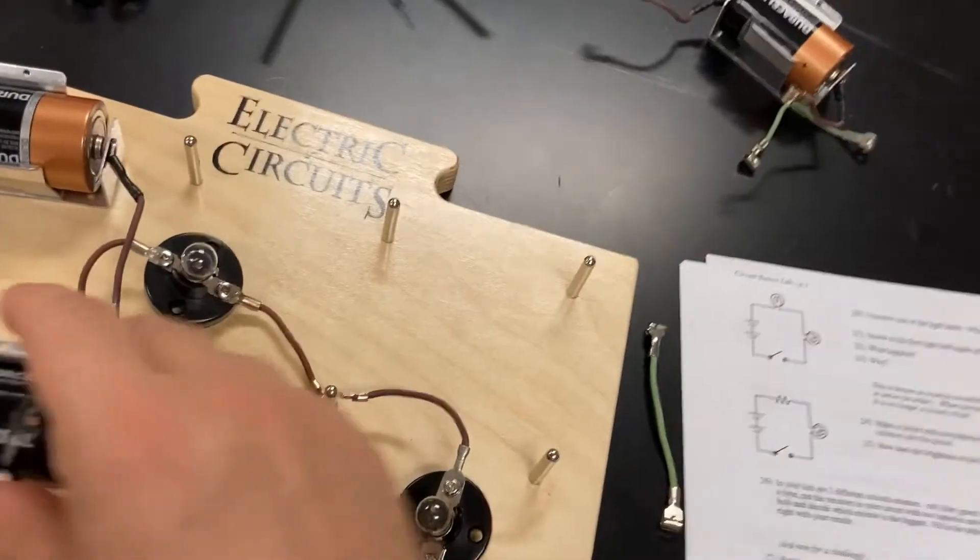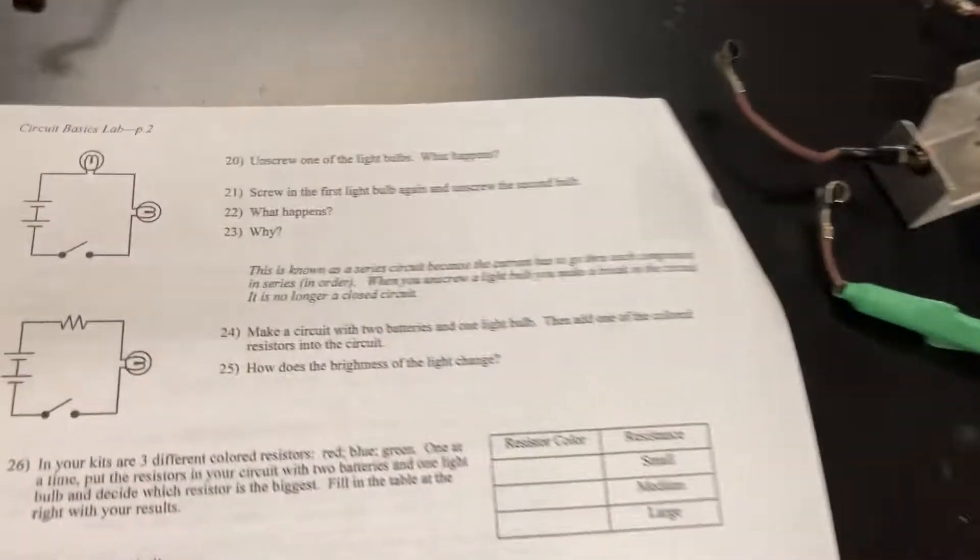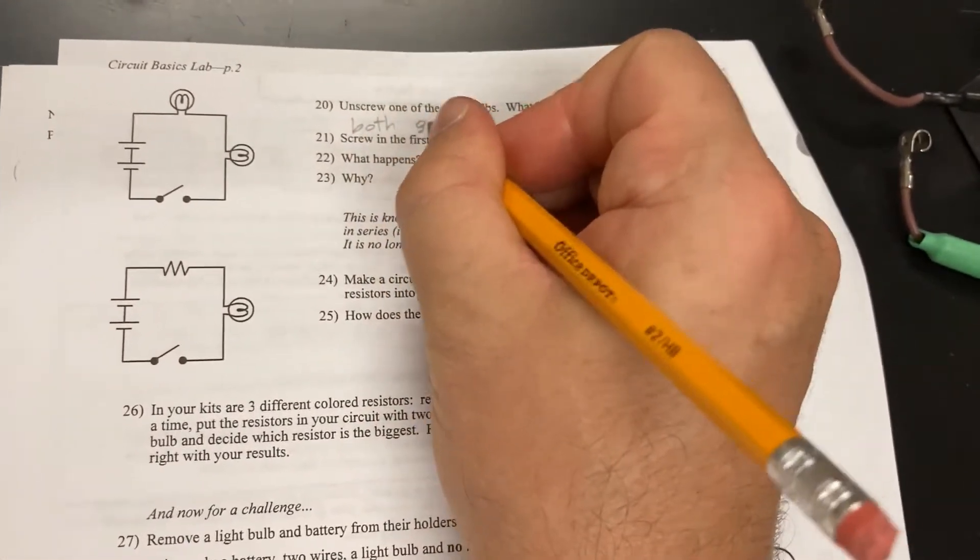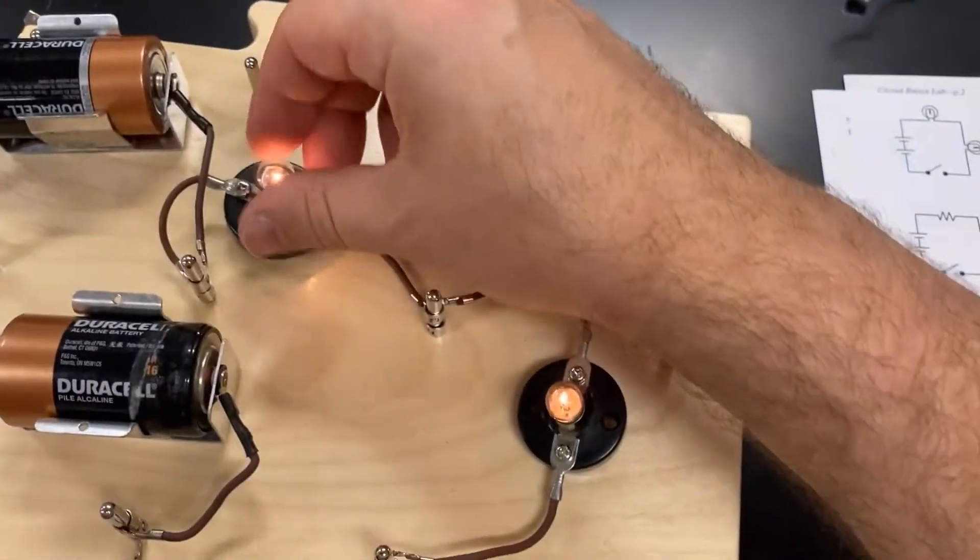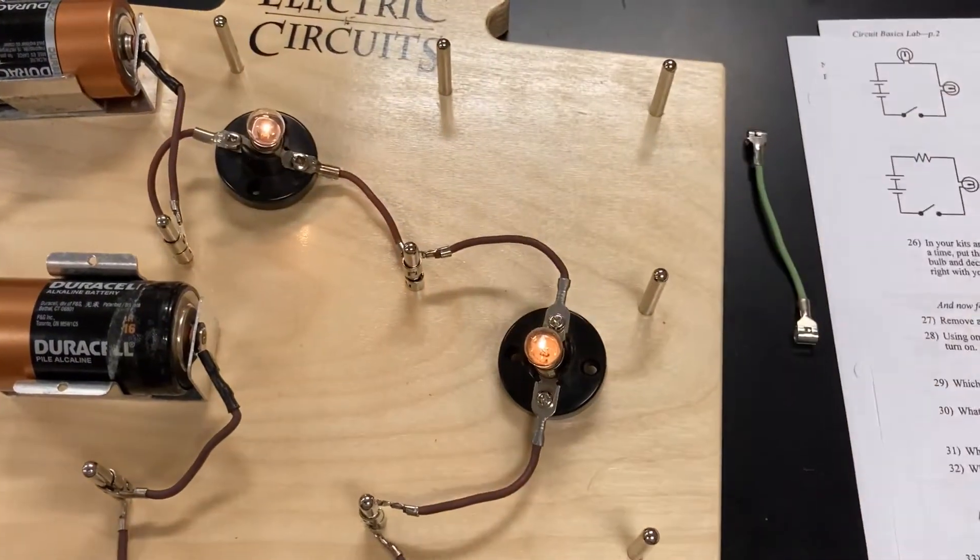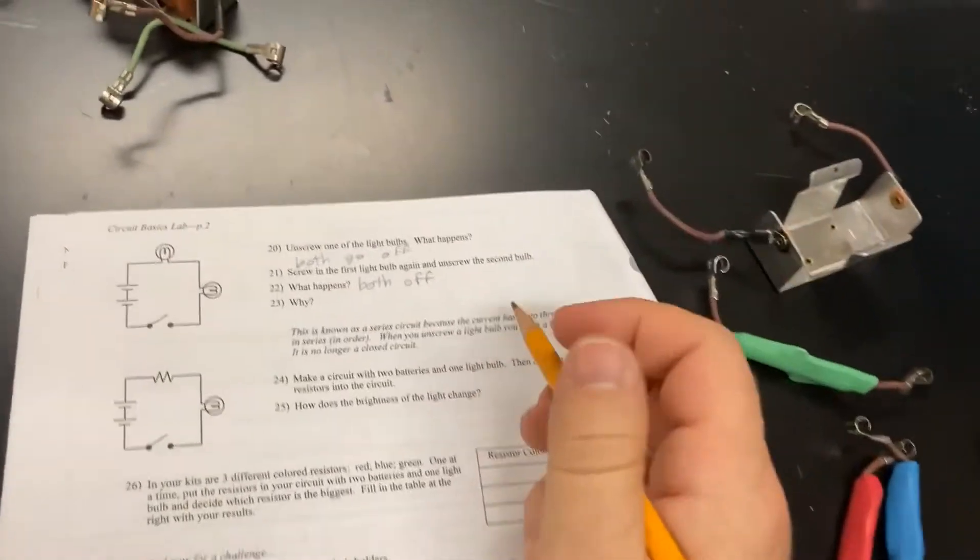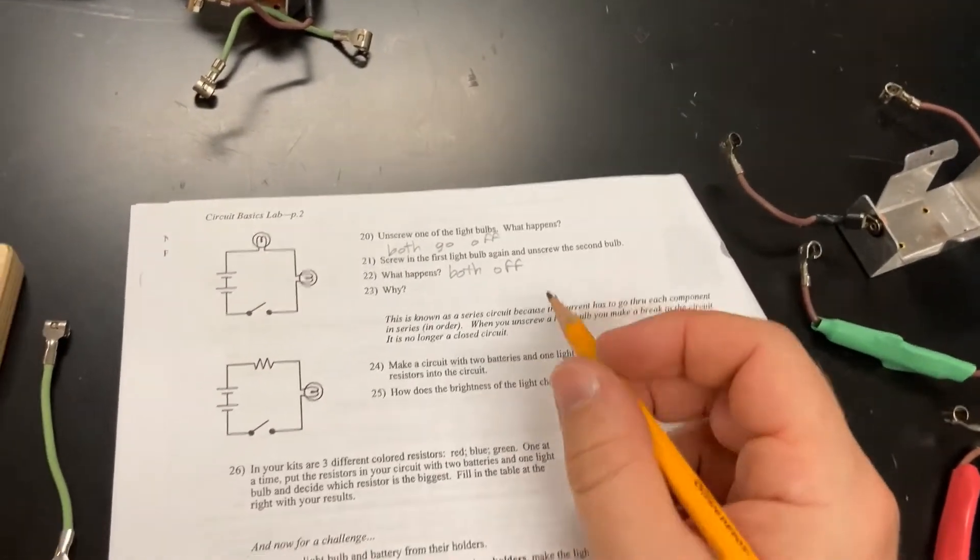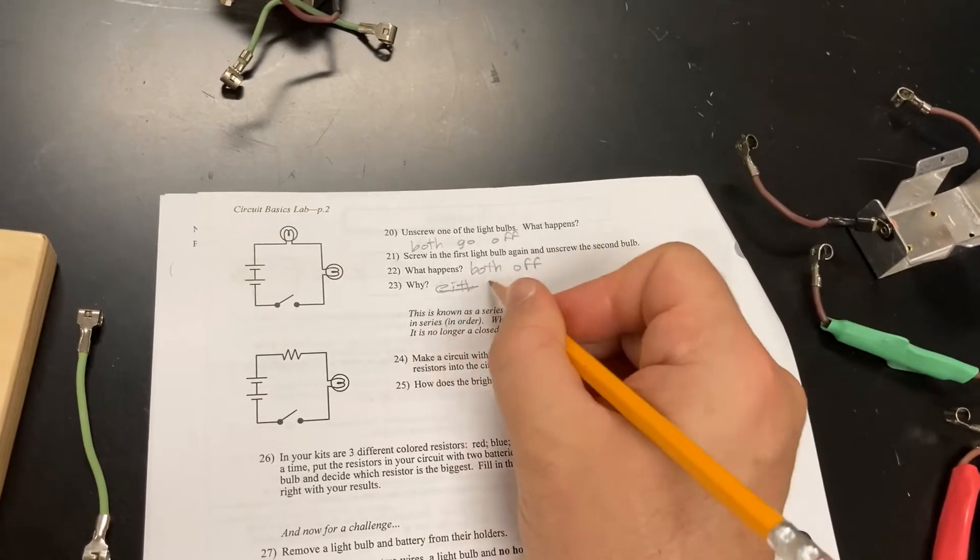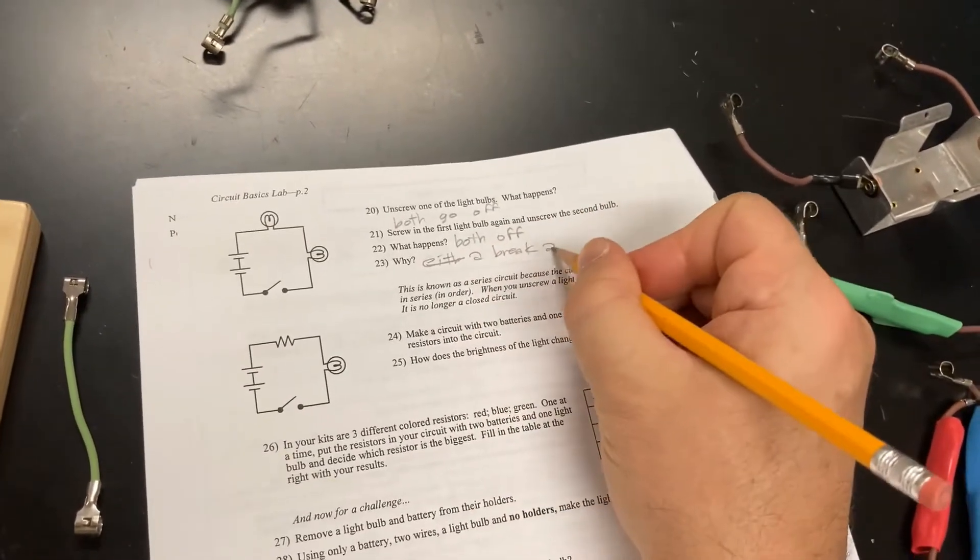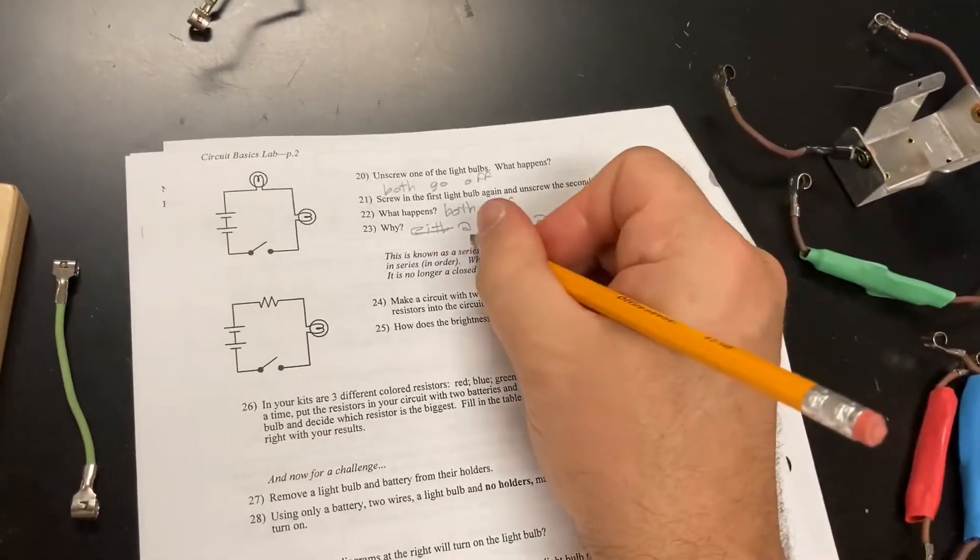Unscrew one of the light bulbs. Okay? Let's get her on. Light bulbs are on. Unscrew one light bulb. The other one goes off. Both go off. Okay? Screw in the light bulb again and unscrew the second light bulb. They both go off. Okay? Both off. Why? You might want to pause and think about that. I want to push on. Pause if you need to. Why? Either... Oh, sorry. A break anywhere. Anywhere. Breaks the circuit. The whole circuit. I'll put it that way.